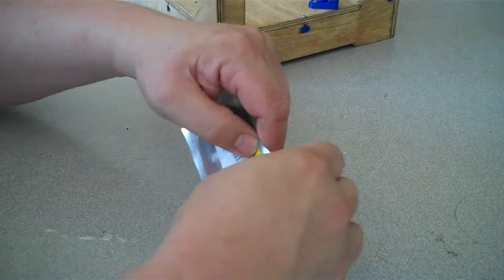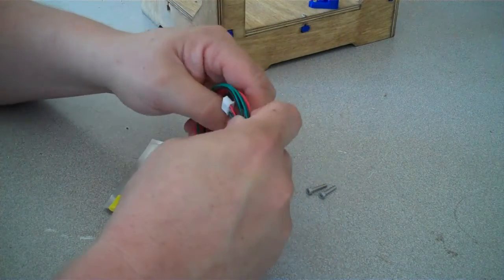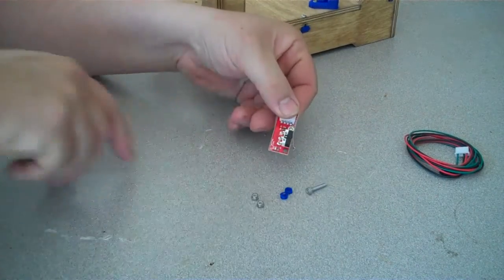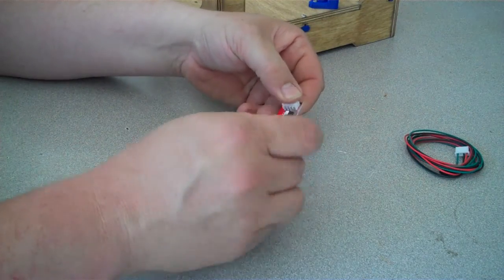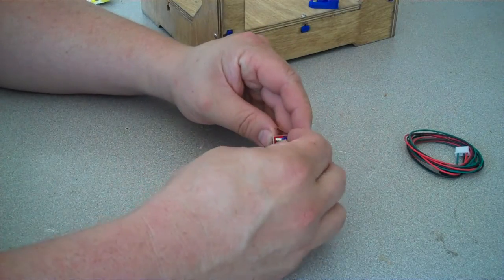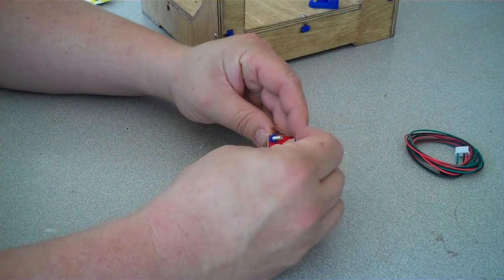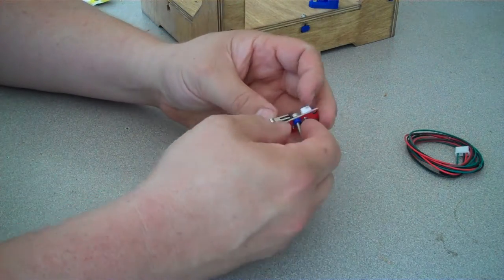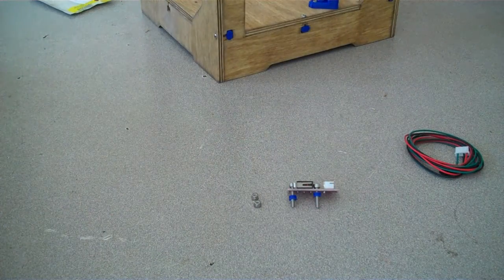An end stop is a sensor switch that's used to limit the motion of the printer. Remove the end stop from the bag and set aside the wire for a later step. We need to prepare to mount the end stop. Take two M3 by 16 millimeter socket head cap screws, different than the button heads we usually use. Run those screws through the holes on the top of the end stop and then add the three millimeter Y end stop standoffs underneath the end stop switch.